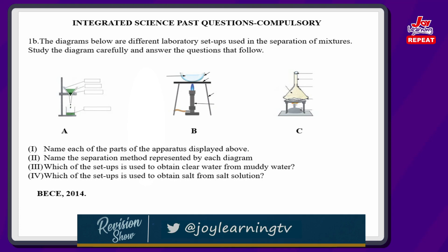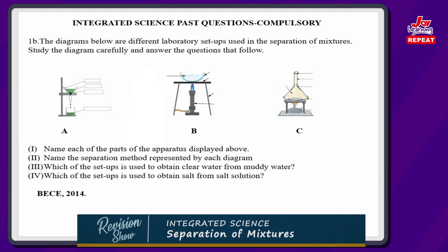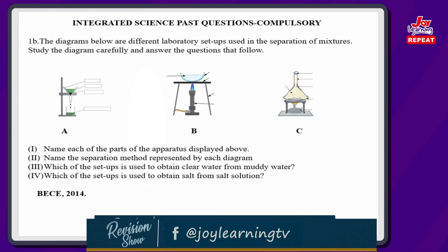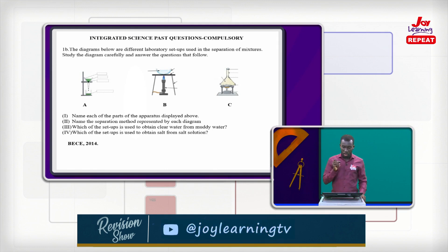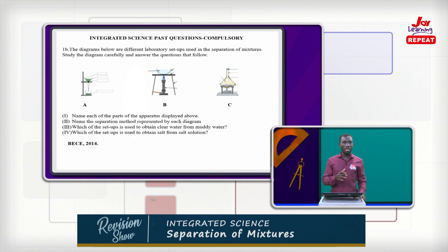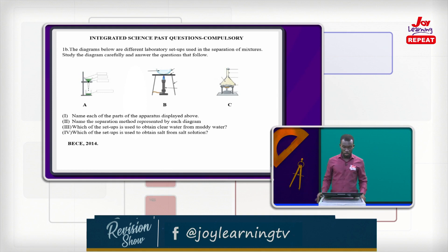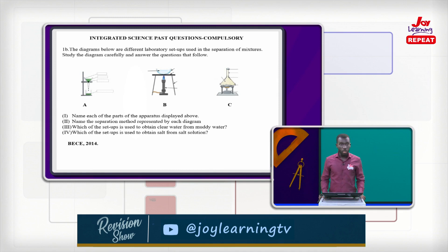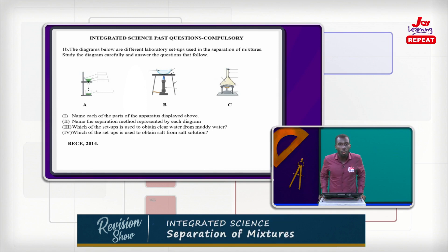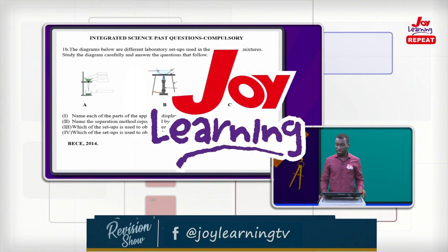Hopefully you have your answers now. Keep them — the right time will come for you to call in and give your answers. Setup B is another method of separating mixtures — label the different parts of it. Setup C is also another type, and you have to tell us what it is and label its parts. Question ii: name the separation method represented by each diagram — A, B, and C. Question iii: which of the setups is used to obtain clear water from muddy water? Question iv: which of the setups is used to obtain salt from salt solution? We go for a quick commercial break and when we come back, I'll be reviewing your answers.